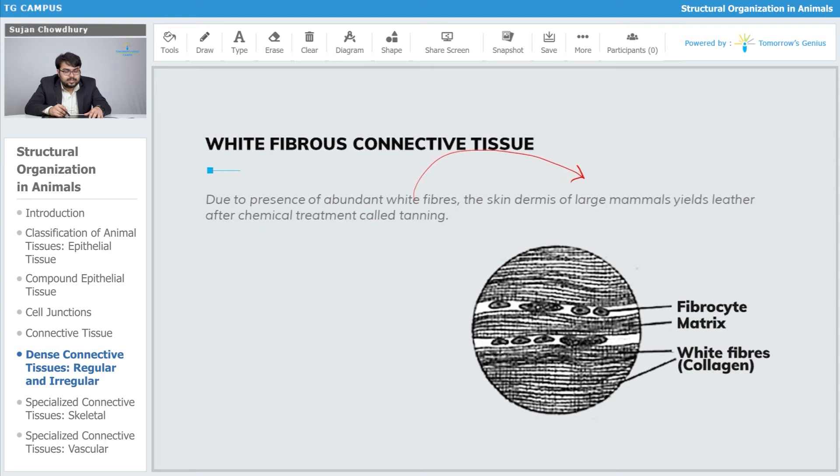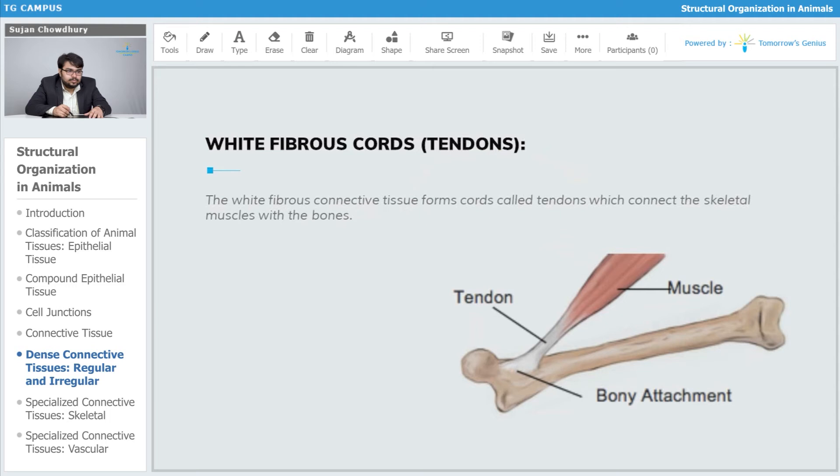The abundant white fibers make this possible. The white fibrous connective tissue forms cords called tendons which connect skeletal muscles with bones. Skeletal muscles are connected with bones by an intermediate structure known as tendon.